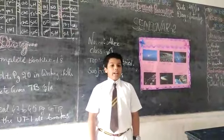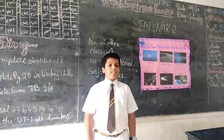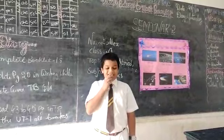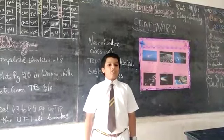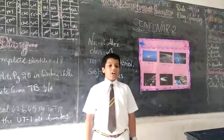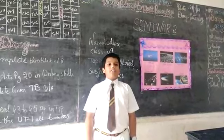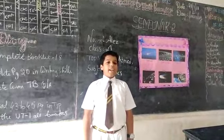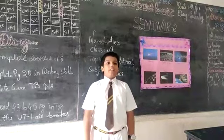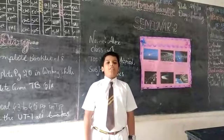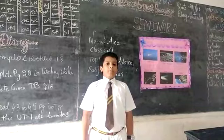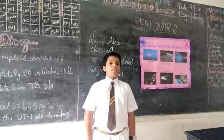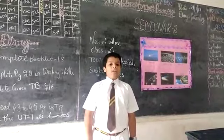Meteorites present in space are known as meteoroids, and those coming towards the earth are known as meteorites. Meteorites are pieces from asteroids and comets, and some of them are pieces from Mars and the Moon.